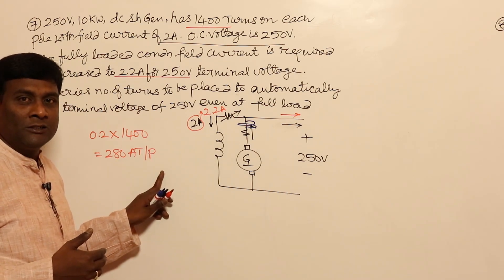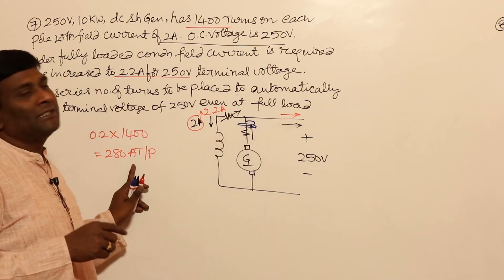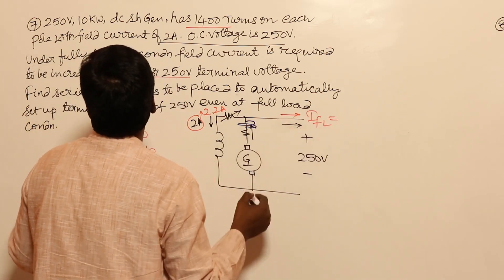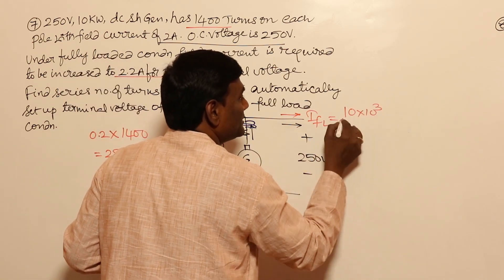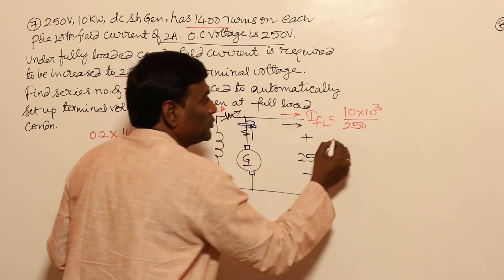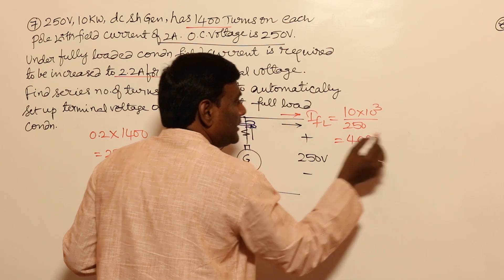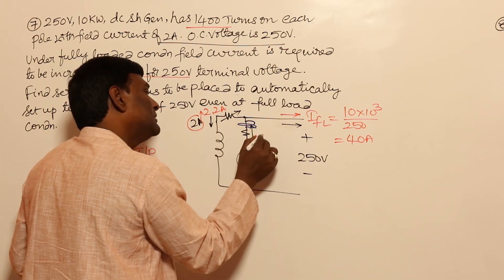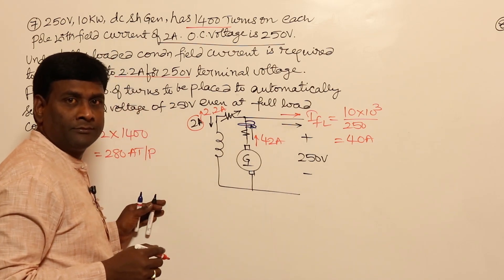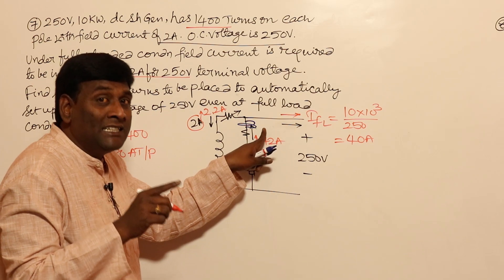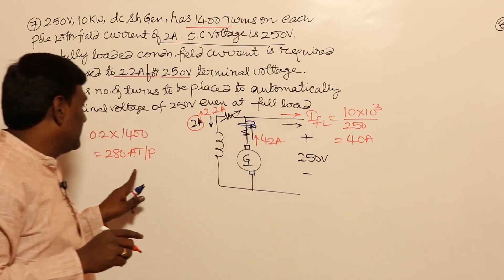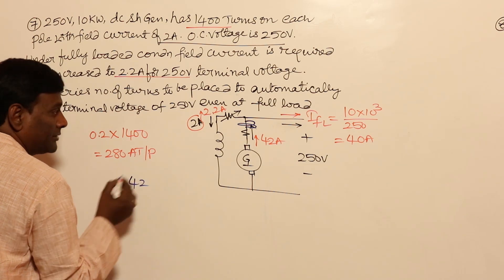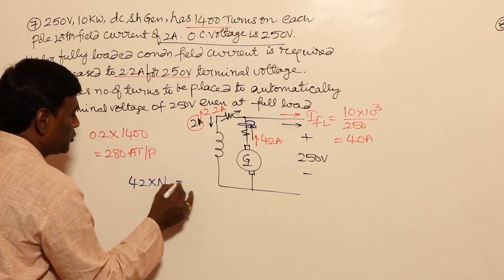The series field winding must compensate this 280 ampere-turns per pole. The full load current is 10 kilowatt divided by 250 volts, which equals 40 amperes. Since no resistance is varied in the new case, field current remains 2 amperes, making armature current 42 amperes. This 42 amperes flowing through the series field winding must produce 280 ampere-turns, so: 42 × N_se = 280.